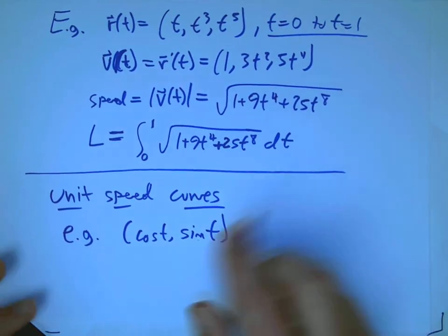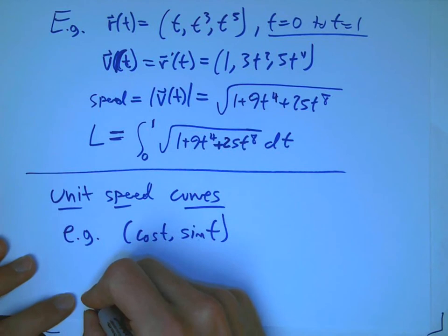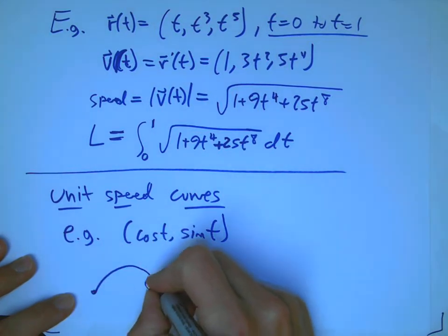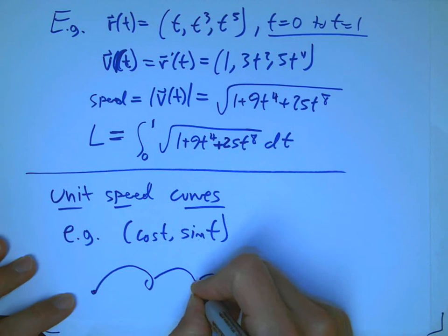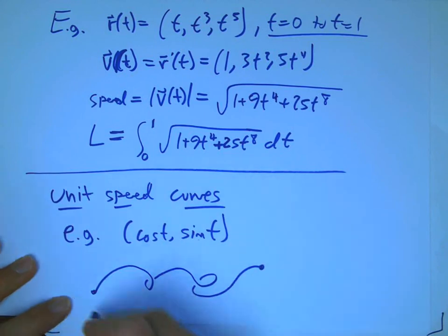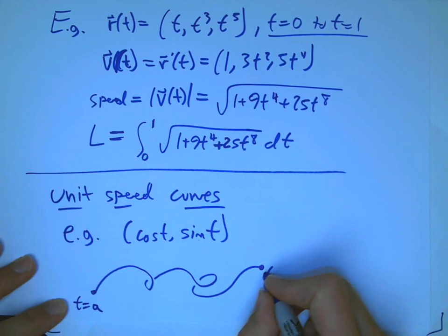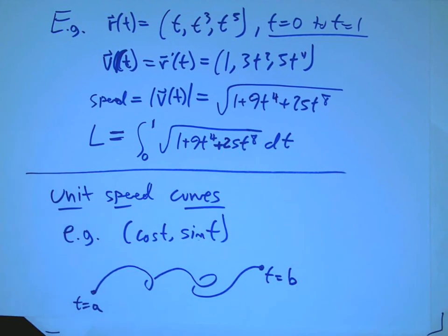So let's look at what happens if I am going along a unit speed curve. And I want to think about two ways of measuring along the curve. One is t. So t goes from a to b.